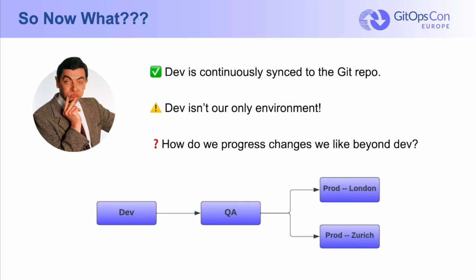I know what you're probably thinking. You're thinking, I use Customize, so it's just a change to the QA overlay. Or you're thinking, I use Helm, so it's just a change to a QA-specific values.yaml file. And you're not wrong. But how can that change itself be made automatically, or at least with minimal manual intervention? Well, it turns out that GitOps doesn't really have an answer for that.